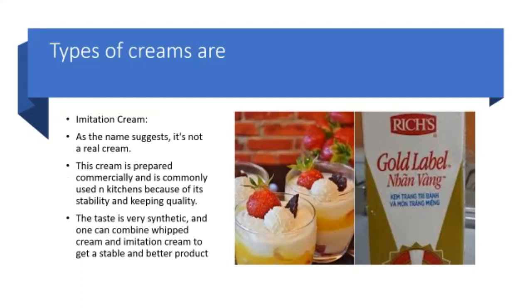Imitation cream is not a real cream. It is prepared commercially and is commonly used in kitchens because of its stability and keeping quality. The taste of imitation cream is very synthetic, and that's why many chefs prefer to combine whipped cream and imitation cream, which gives a stable and better tasting product. As shown in the picture, Rich is one of the brands which is very popular in India and is used in bakery.